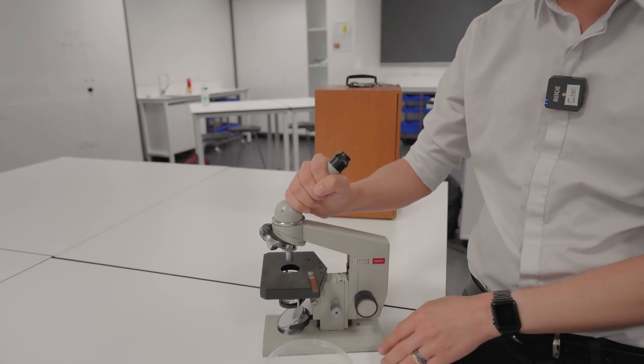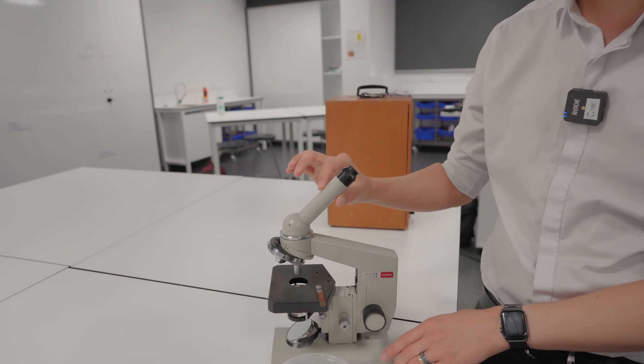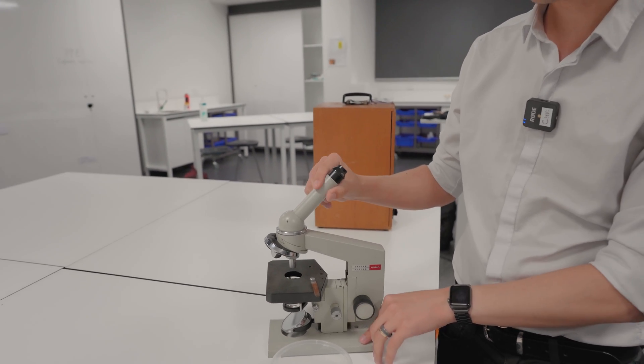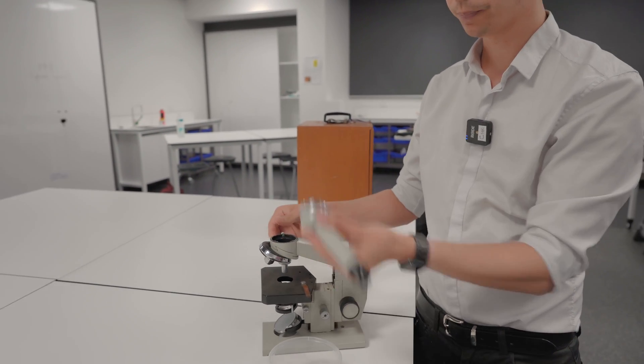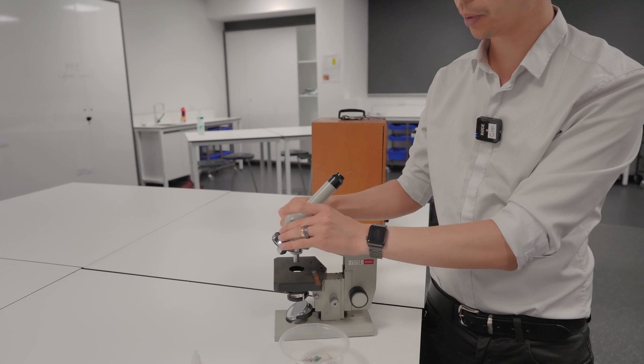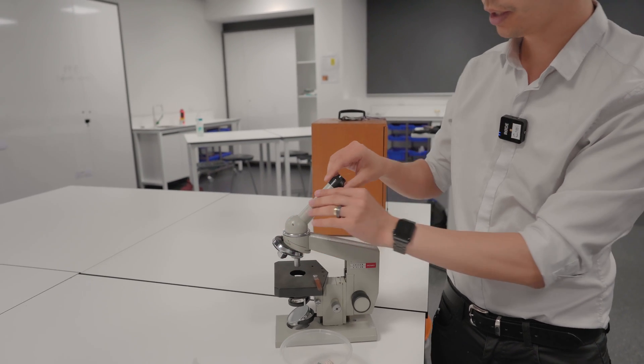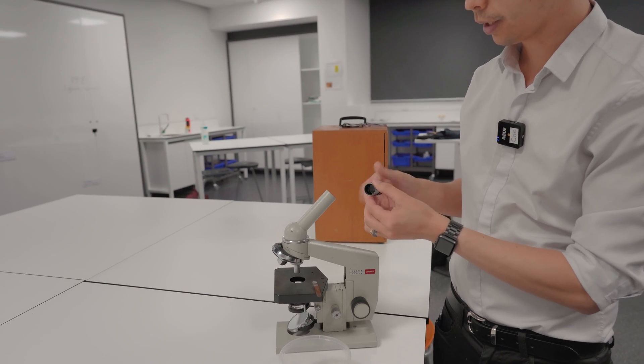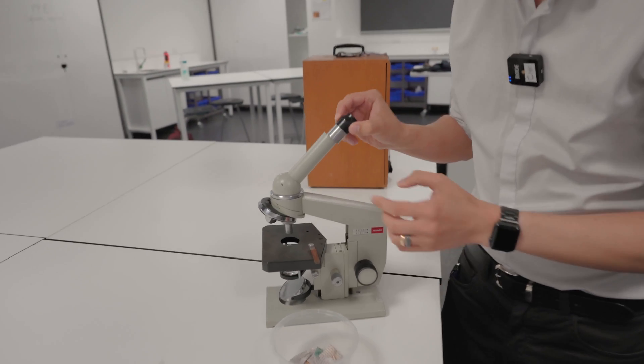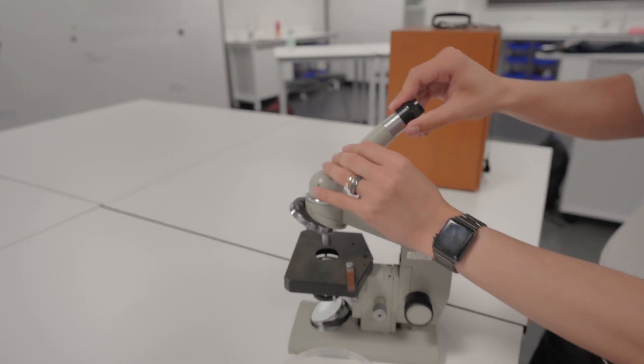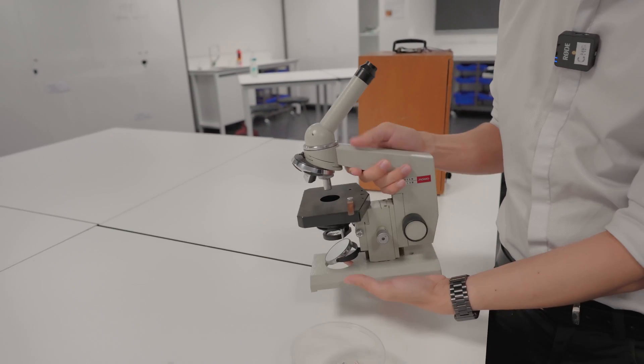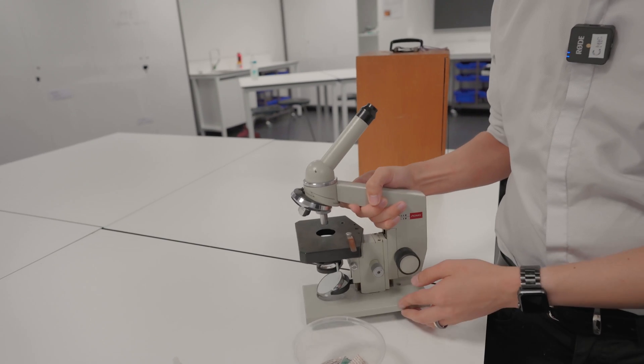I have seen students in the past who have picked them up from this part of the microscope. That's not as secure so this one here actually comes right out. So imagine what would happen if you grabbed that and it came undone. Also this comes undone. I think we need to get a close-up of that. Very satisfying. For that reason you have to go by the arm and the base when you lift it and put it away.